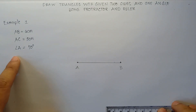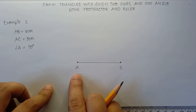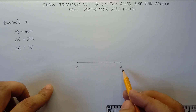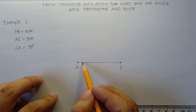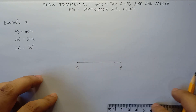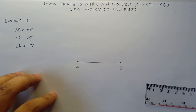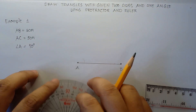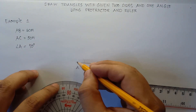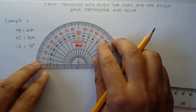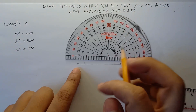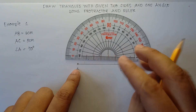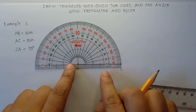Now we have given angle A, that is 70 degrees, therefore our angle will be here. This is point A, point B, so our angle forms like this for angle A. Using your protractor to find that angle, 70 degrees — you align this point in the center part of your protractor.